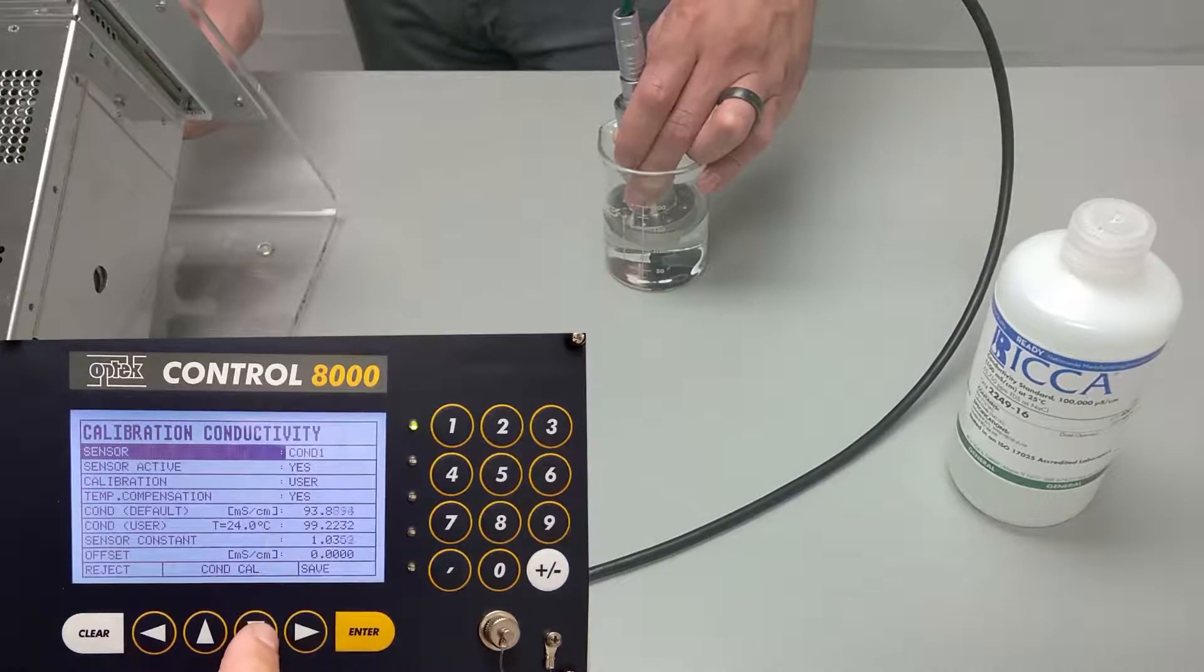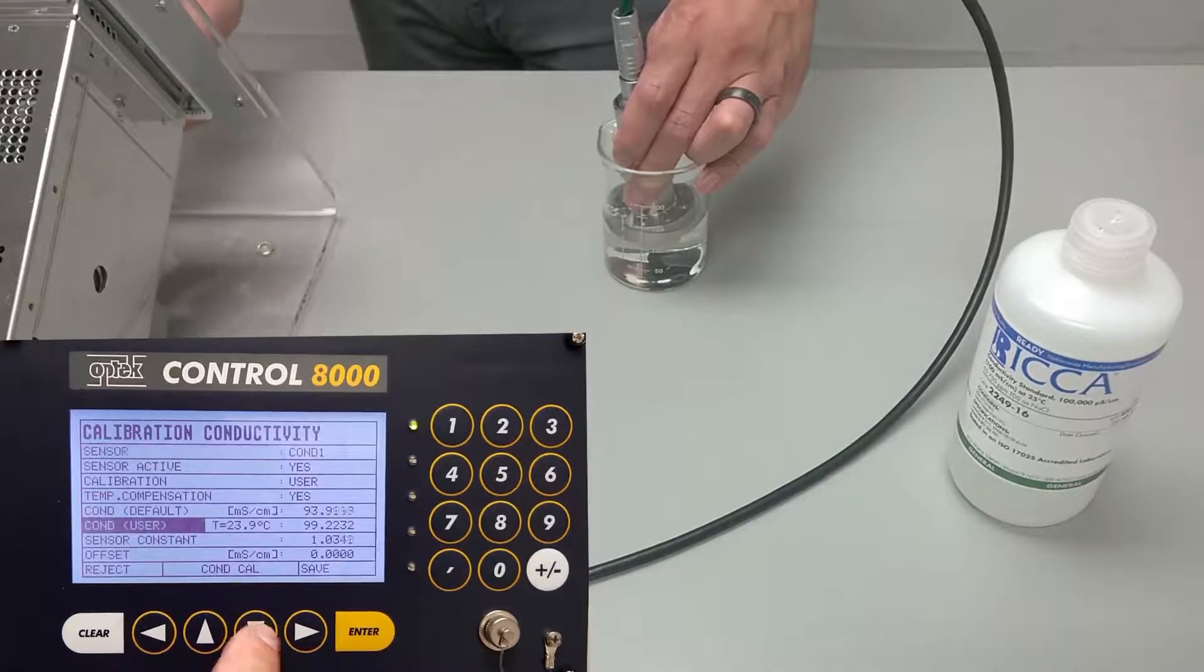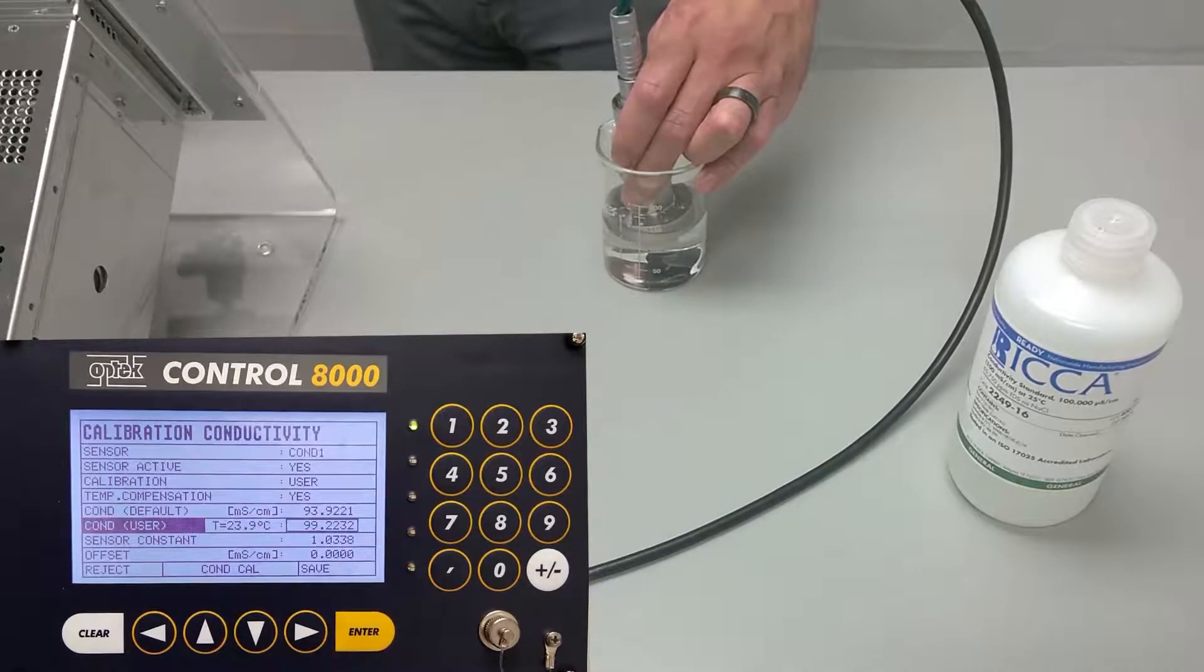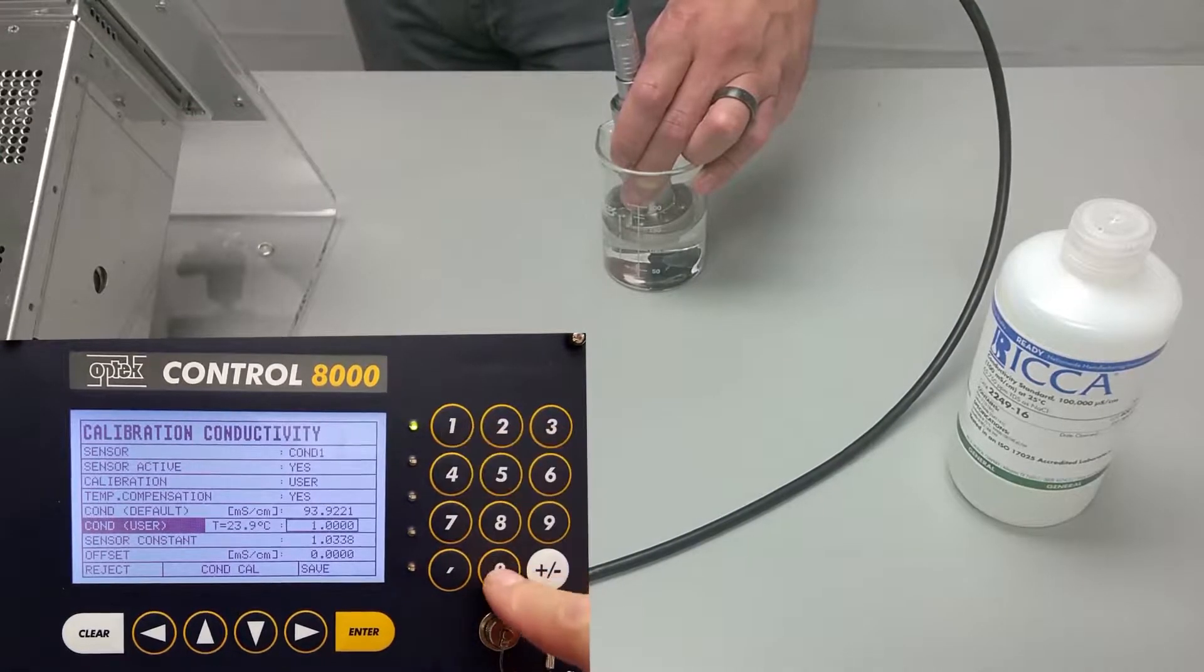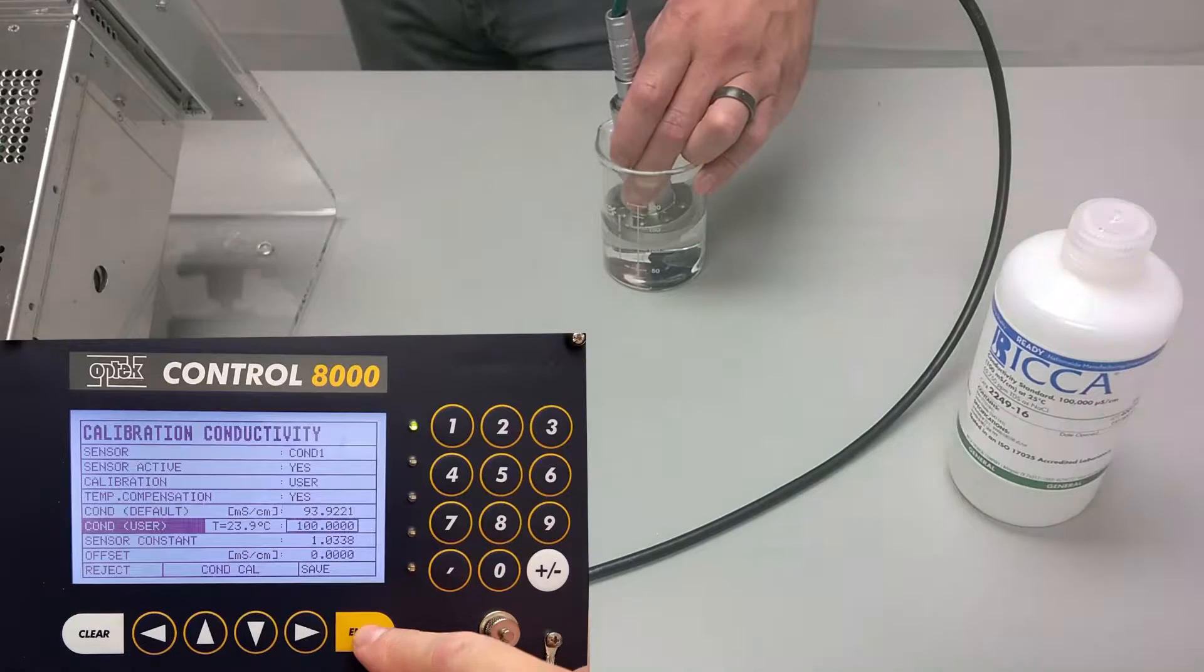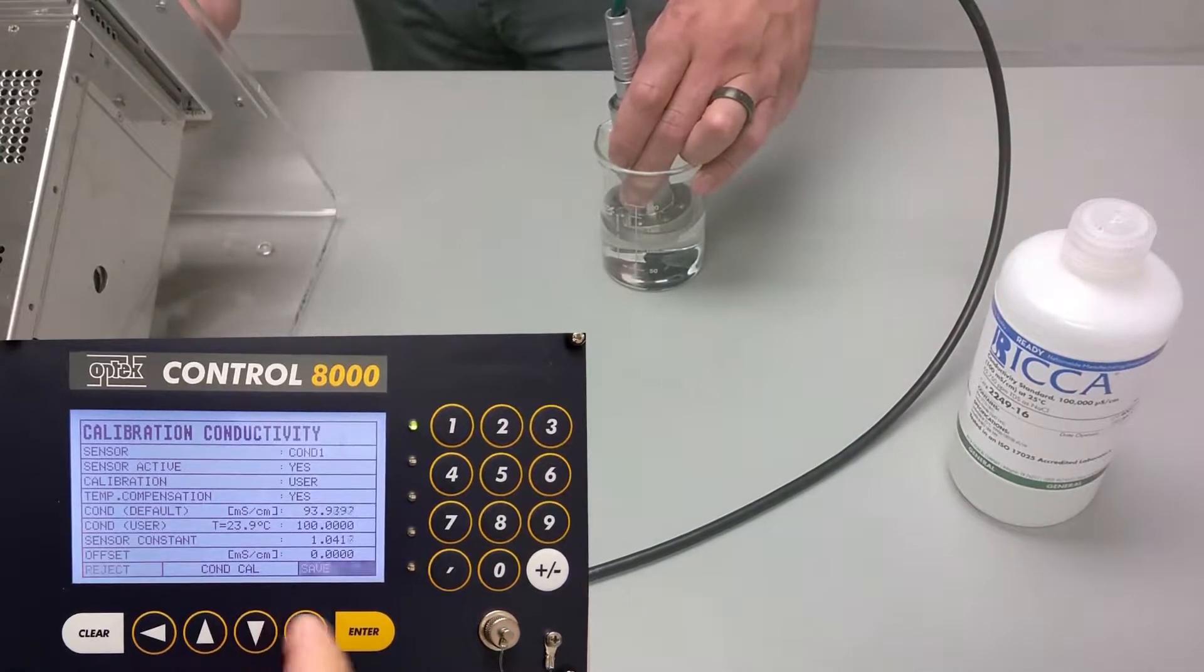COND1 is selected. Scroll down to COND user and press enter. Enter the nominal value for the conductivity solution of 100, press enter, then scroll down and save the changes.